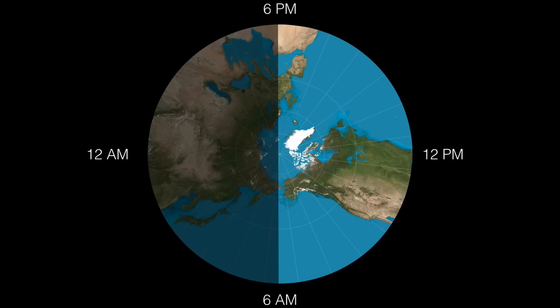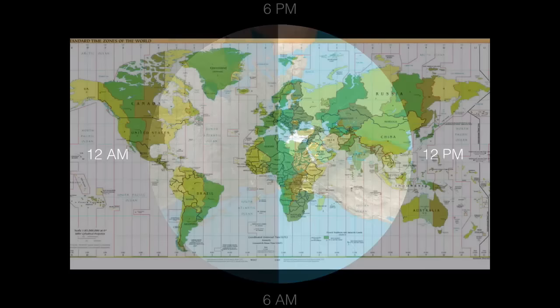If we take that and project it onto a map, we have our time zones. There is a piece of this that's political — some countries have made decisions to go into the time zone of another area just so they could be standardized with their home continent or home country. But for the most part, every line of longitude marks a time zone.